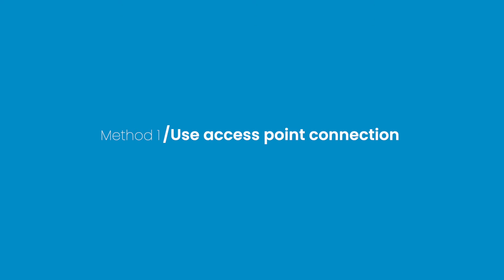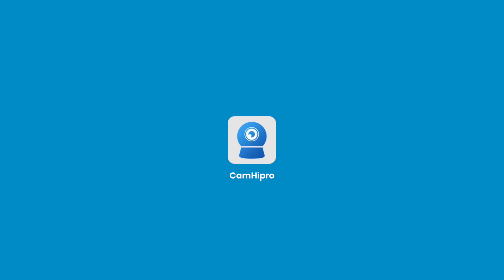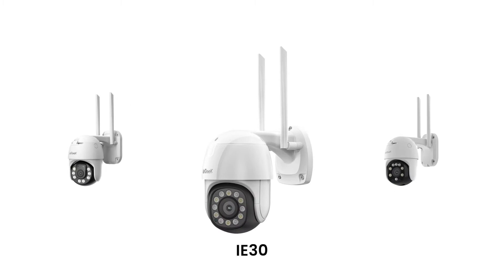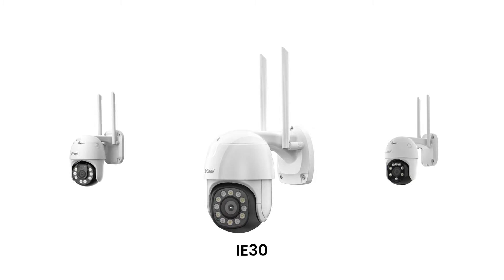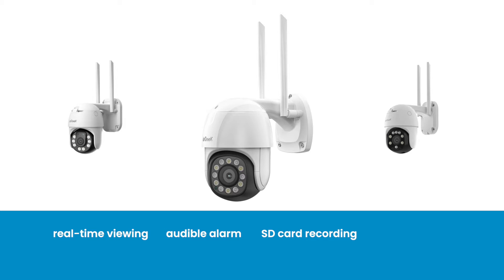Method 1: Use Access Point Connection. This feature is only applied to IE Geek Cameras with the Cam High Pro app, such as IG-20, IG-90, IE-20, IE-30, and IE-50. It supports real-time viewing, audible alarm, SD card recording, and auto-tracking without Wi-Fi or network.